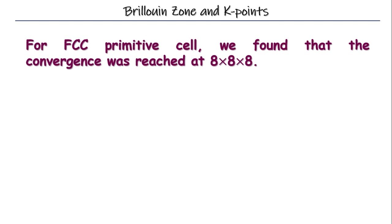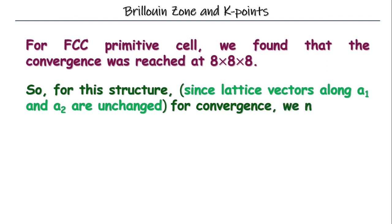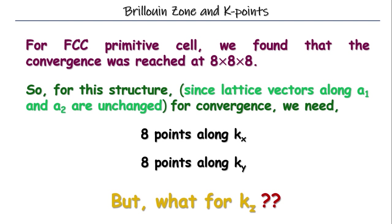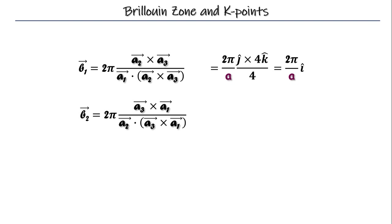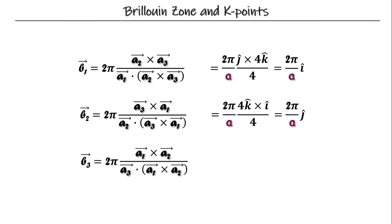For FCC primitive cell, it was 8 x 8 x 8. So, for this structure, along k1 and k2, it will be 8. But what for k3? Let's calculate the reciprocal lattice vectors. This is just simple graduation. So, b1 equals to 2 pi a2 cross a3 divided by the volume equals to 2 pi by a j cap cross 4k cap divided by 4 which is equals to actually 2 pi by a i cap. b2 equals to 2 pi by a j cap and b3 equals to 2 pi by a1 cross a2 divided by the volume equals 2 pi by 4k cap.